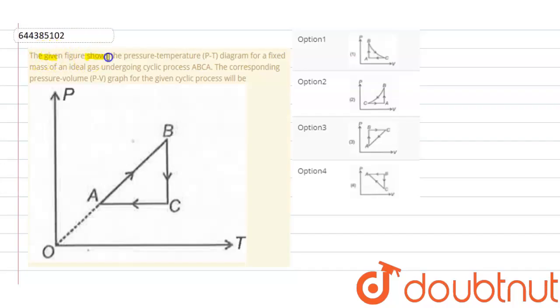The given graph shows the pressure-temperature diagram for a fixed mass of ideal gas undergoing cyclic process A→B→C→A. The corresponding PV graph for the cyclic process will be... So this question is based on the chapter thermodynamics.